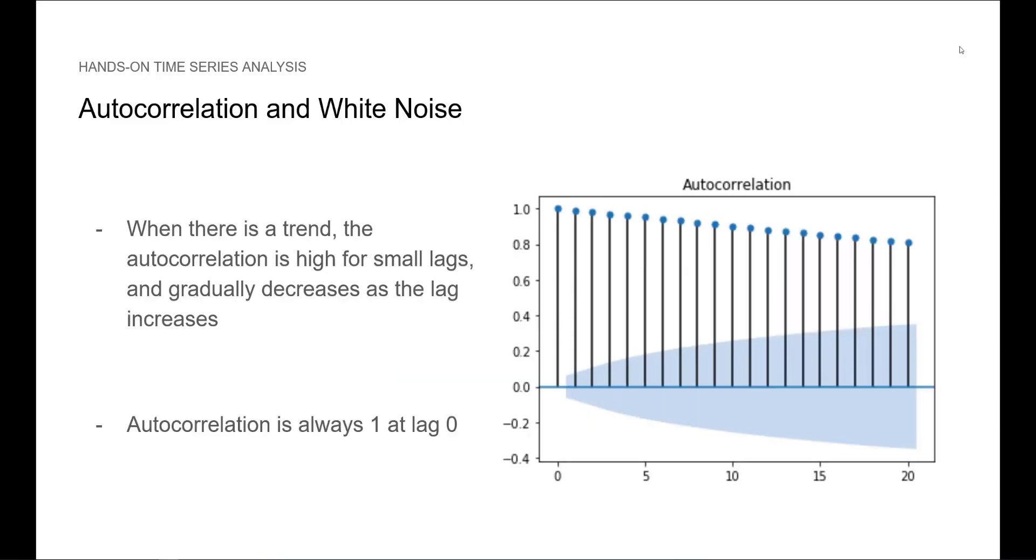Note that when there is a trend, the autocorrelation will be high for small lags and gradually decreases as the lag increases. Therefore, we can see here that our ACF plot clearly shows a time series with some kind of trend. Note also that the autocorrelation will always be 1 at lag 0.